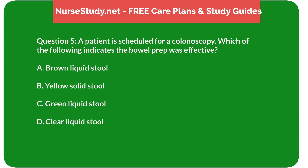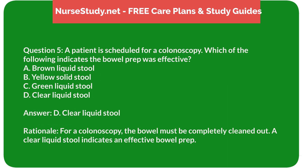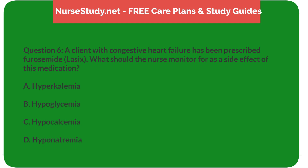Question 5: A patient is scheduled for a colonoscopy. Which of the following indicates the bowel prep was effective? A) Brown liquid stool, B) Yellow solid stool, C) Green liquid stool, D) Clear liquid stool. Answer: D, Clear liquid stool. Rationale: For a colonoscopy, the bowel must be completely cleaned out. A clear liquid stool indicates an effective bowel prep.